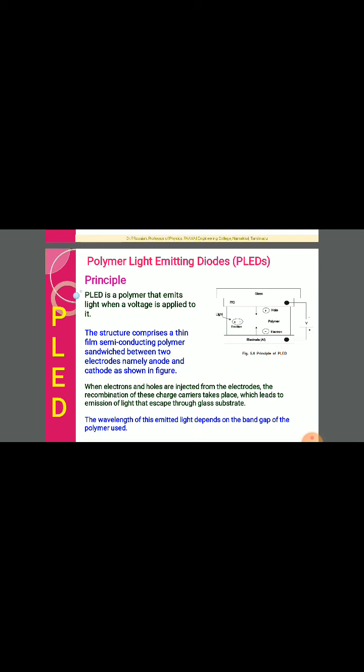The semiconducting polymer is sandwiched between the electrodes. When the electrons and holes are injected from the electrodes, recombination of these charge carriers takes place, which leads to emission of light that escapes through the glass. This is the common phenomena. The wavelength of this light depends on the band gap of the polymer.